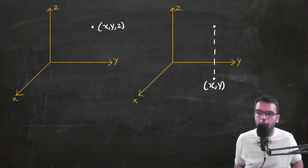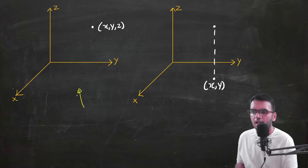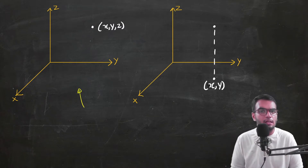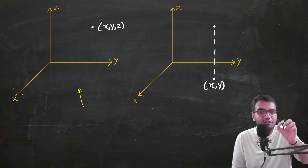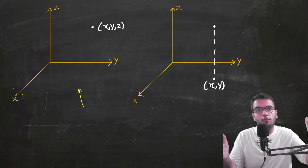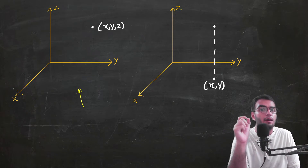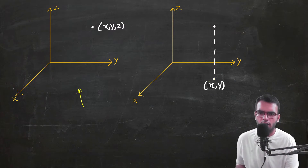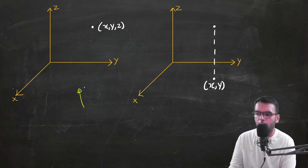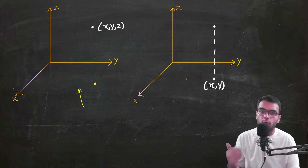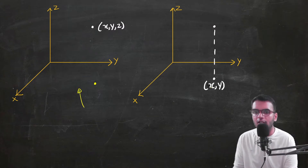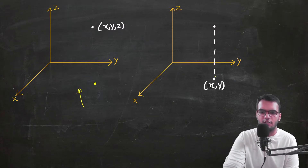Consider a 3D Cartesian system with a point having three coordinates x, y, z. To convert to cylindrical coordinates, we drop a perpendicular onto the xy-plane. The xy-plane is two-dimensional, which we know how to work with. The foot of the perpendicular has coordinates x and y in the xy-plane.